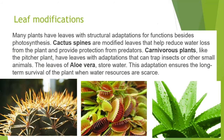Many plants have leaves with structural adaptations for functions besides photosynthesis. Cactus spines are modified leaves that help reduce water loss from the plant and provide protection from predators. Carnivorous plants, like the pitcher plant shown in the picture, have leaves with adaptations that can trap insects or other small animals.